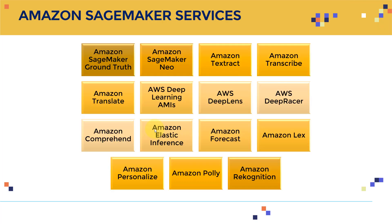There are tons of services available in Amazon SageMaker. There's Ground Truth, Amazon SageMaker Neo, Amazon Textract to extract text, Amazon Transcribe, Amazon Translate, AWS Deep Learning AMIs, Deep Lens — a camera for deploying deep learning models — and DeepRacer for reinforcement learning.